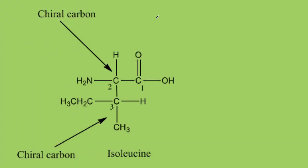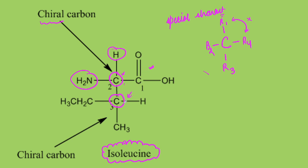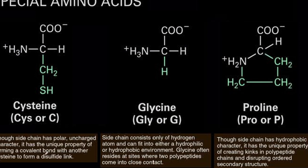Now we are going to specific amino acids. On all the sides of this carbon, different groups are present and they are not the same. This carbon is known as chiral carbon — all of the sides are different, having different R groups. That means there are two chiral carbons in isoleucine. Now we will talk about some more amino acids.